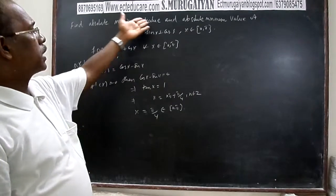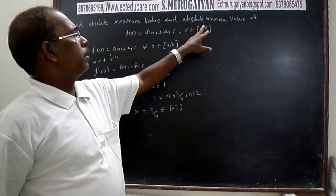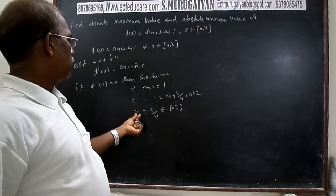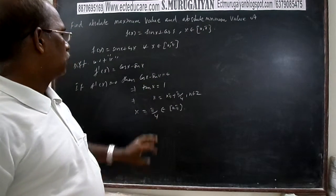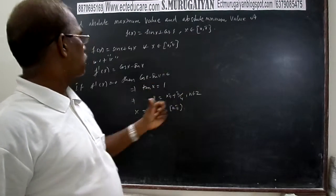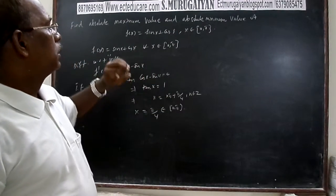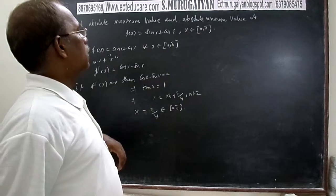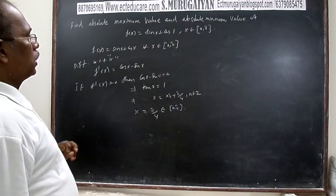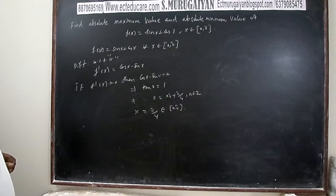How do we estimate the absolute maximum and absolute minimum? We find the value of the function at the critical points and at the endpoints of the interval. We need to find f(0) and f(π) — the extreme values — along with f(π/4), which is the root of f'(x) = 0. Of all these values, the largest is the absolute maximum and the least is the absolute minimum.